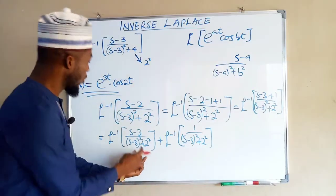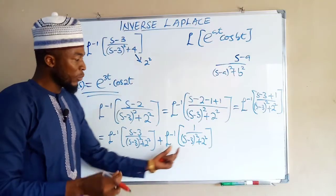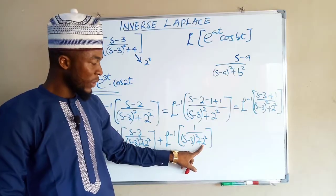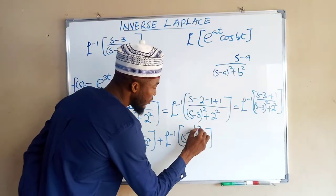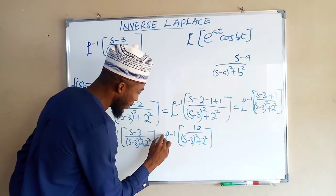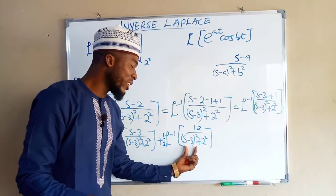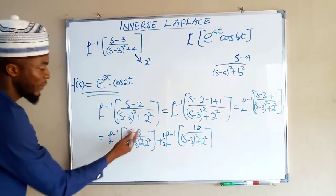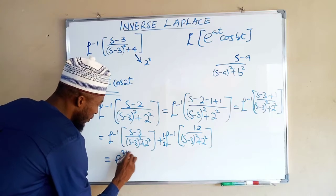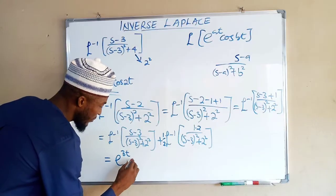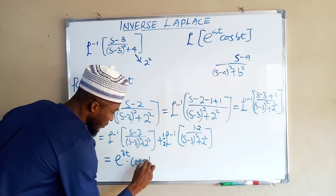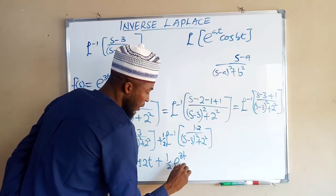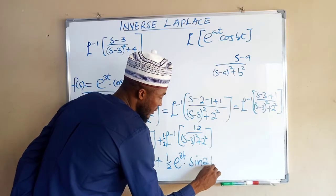The first term corresponds to e^(3t)cos(2t). For the second term, we need a sine function, but to obtain that the numerator must equal 2. So we multiply by 2 and compensate by placing 1/2 in front. This gives 1/2 times the inverse Laplace transform of 2 over (s minus 3)² plus 2², which is an exponential multiplied by a sine function.